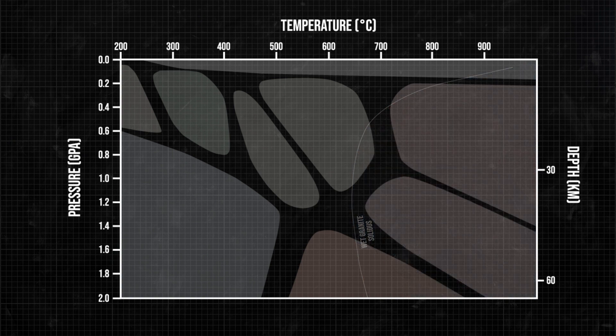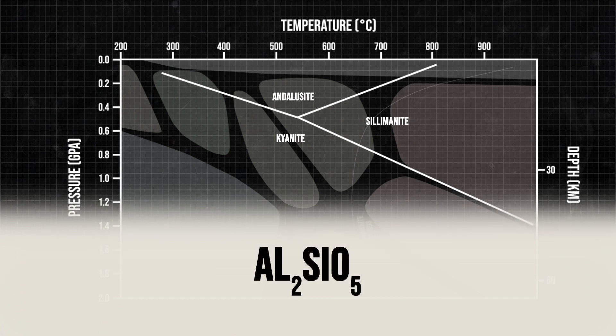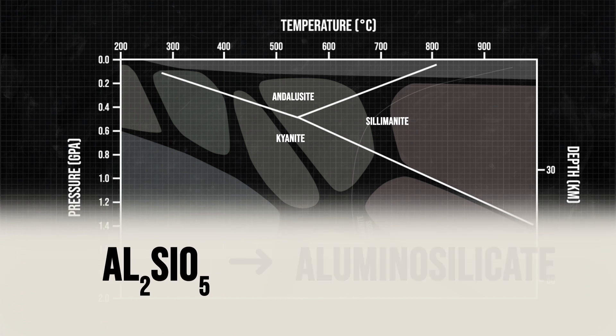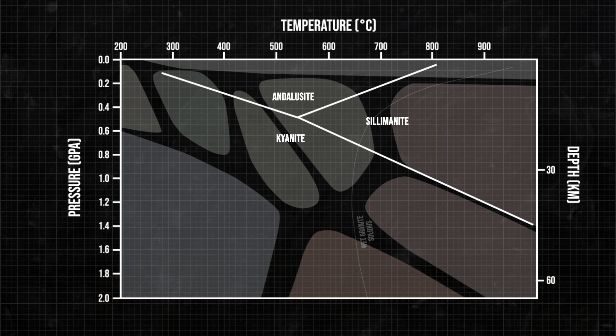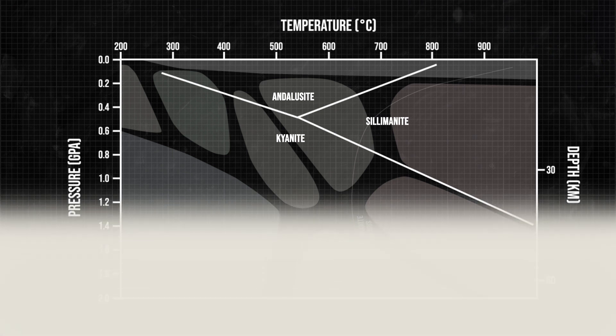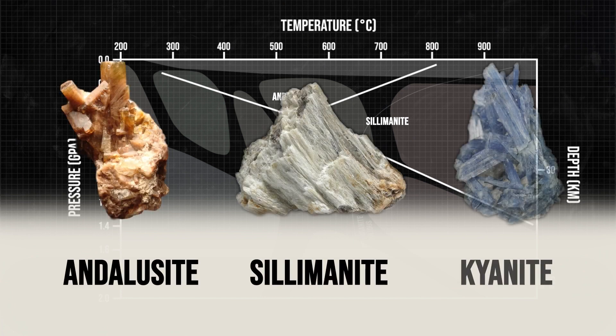Another interesting set of thin white lines show the pressure-temperature conditions where three polymorphs of Al2SiO5 or aluminosilicates form. These minerals form in rocks that are rich in, you guessed it, aluminum. There are three key aluminosilicates: andalusite, sillimanite, and kyanite.